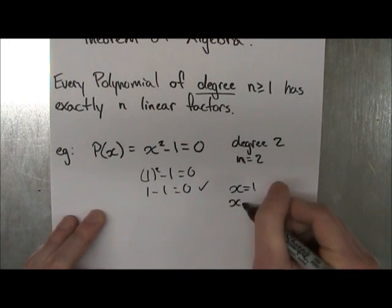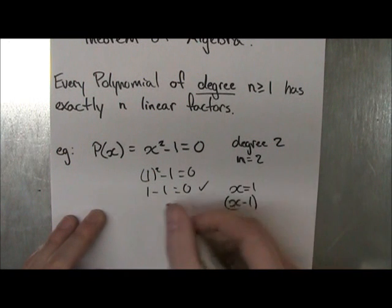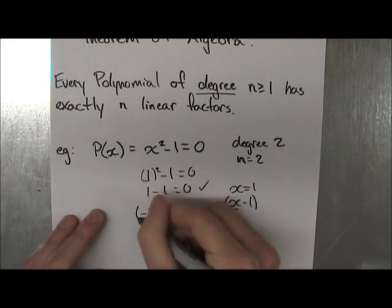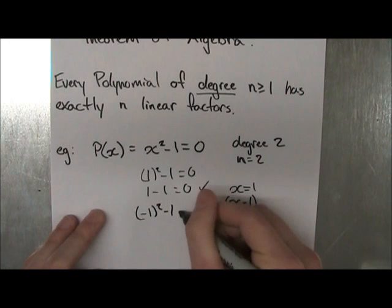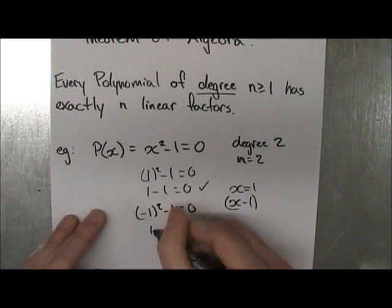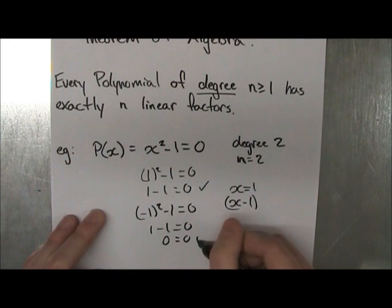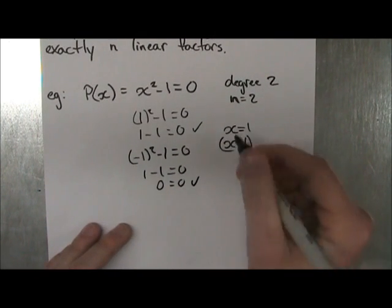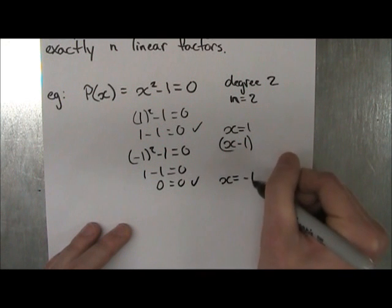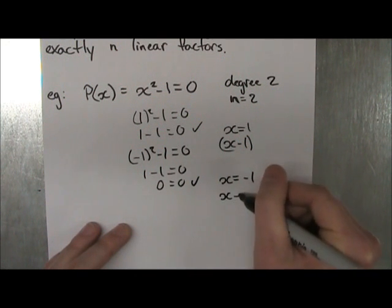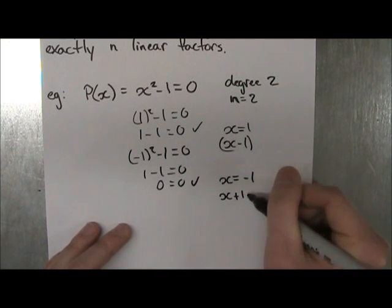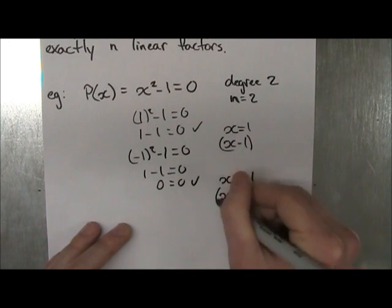So then x minus 1 must be a factor. And then if we plug in minus 1 squared minus 1 equals 0, we still get 1 minus 1 is equal to 0. So 0 is equal to 0. This is true. And therefore, x is equal to minus 1.